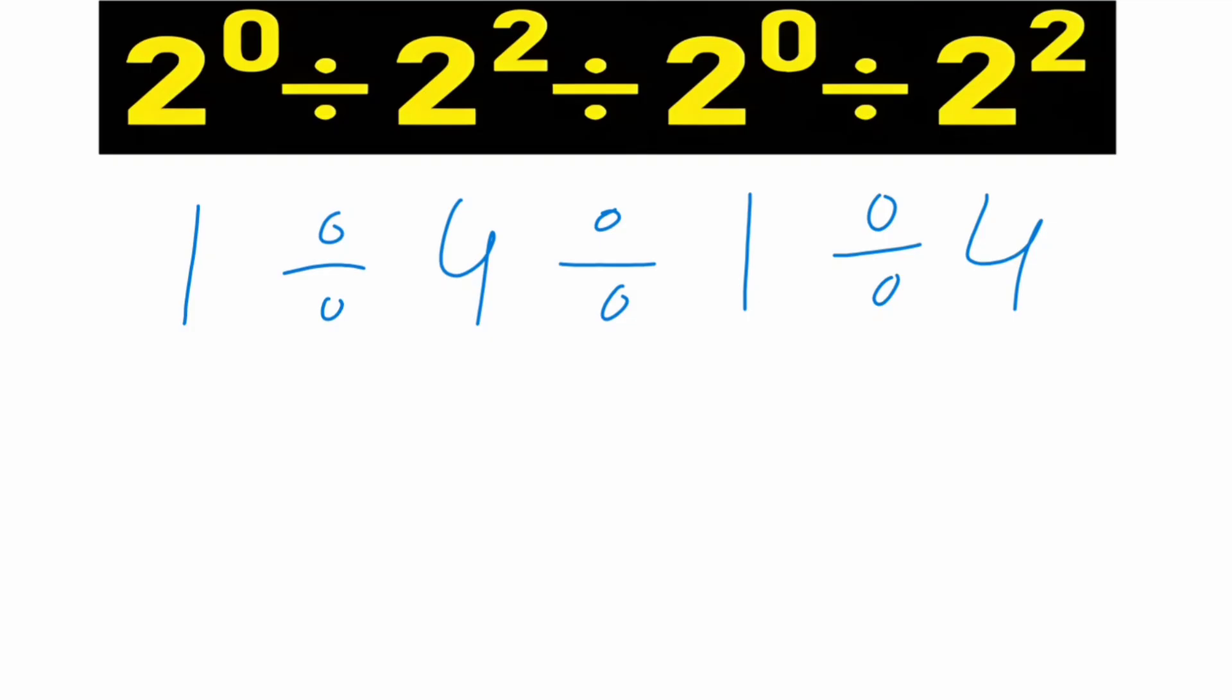This problem solved by PEMDAS rule from left to right. So 1 divided by 4 is equal to 1 over 4, divide 1, divide 4. So 1 over 4 divided by 1 is equal to 1 over 4, divide 4.